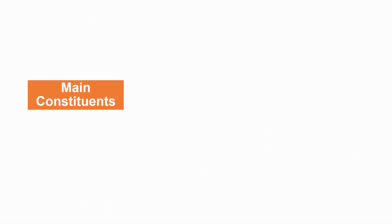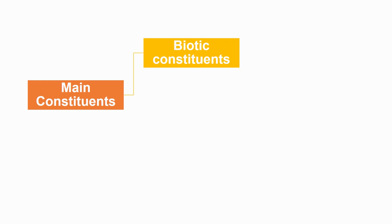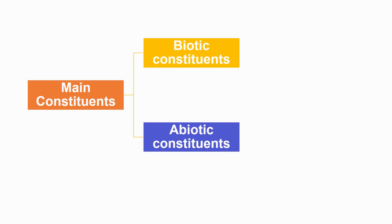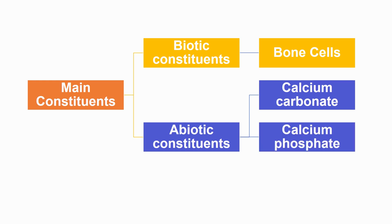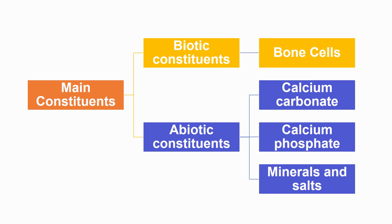Now we will discuss the main constituents of bone. Our bones are hard and not flexible. Bones are composed of two main constituents: biotic and abiotic constituents. Bone cells are the biotic constituents of the bone, while calcium carbonate, calcium phosphate, minerals, and water are the abiotic components of the bone.